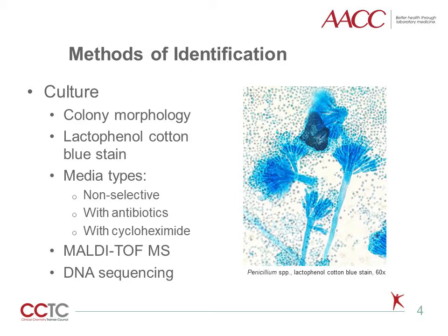DNA sequencing is the most accurate identification technique when using isolated fungi from culture. Pan-sequencing can also be performed on patient samples. Multiple targets are used; the most common is the internal transcribed spacer (ITS) region in the ribosome. Sequencing is highly accurate but requires a specialist laboratory and is not widely available in the clinical setting.